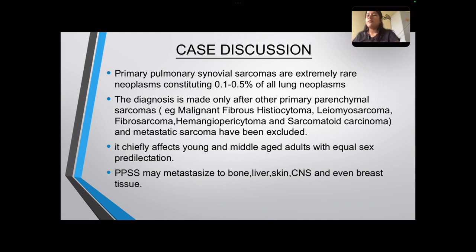Case discussion. Primary pulmonary synovial sarcomas are extremely rare neoplasms, consisting of only 0.1 to 0.5% of all lung neoplasms. The diagnosis is made only after metastatic sarcomas from other soft tissues and other primary parenchymal sarcomas — like malignant fibrous histiocytoma, leiomyosarcoma, fibrosarcoma, hemangiopericytoma, and sarcomatoid carcinomas — have been ruled out. It chiefly affects the young and middle-aged population with equal sex predilection.